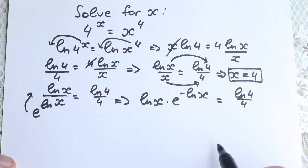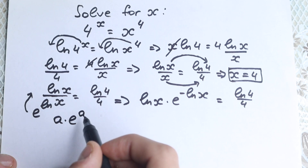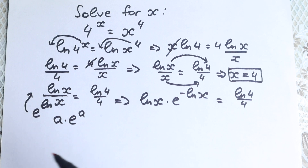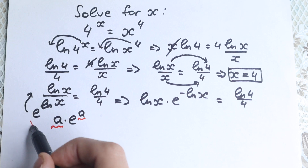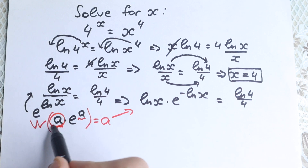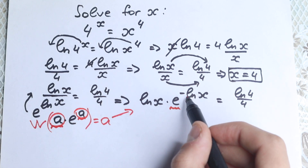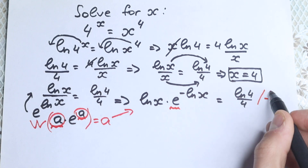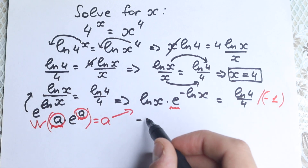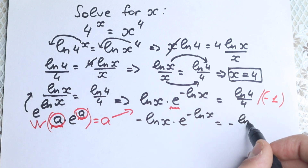Now I want to mention the Lambert W function. In simple terms: if we have an expression of the form a·e^a, applying the Lambert W function to it gives back just a. To match that form here, we need the two highlighted expressions to be the same. Since natural log(x) and minus natural log(x) differ by a sign, we multiply both sides by minus 1, giving minus natural log(x) times e^(minus ln x) equal to minus natural log(4)/4.